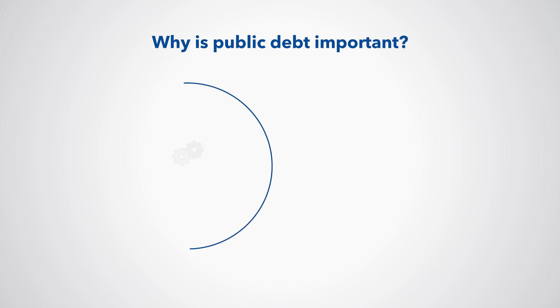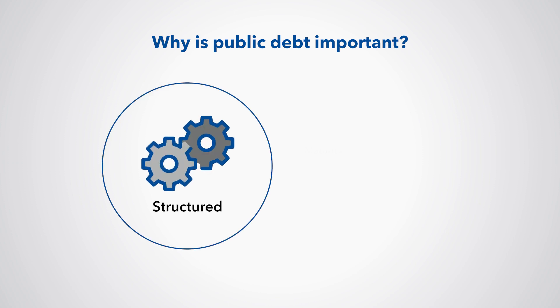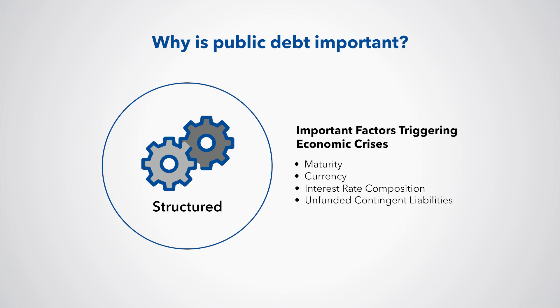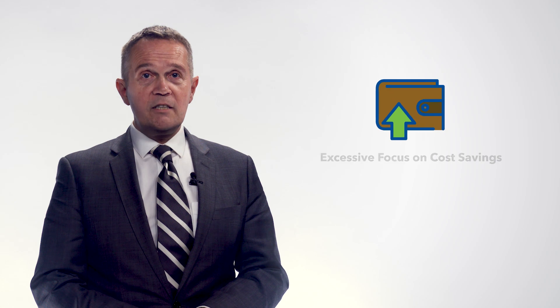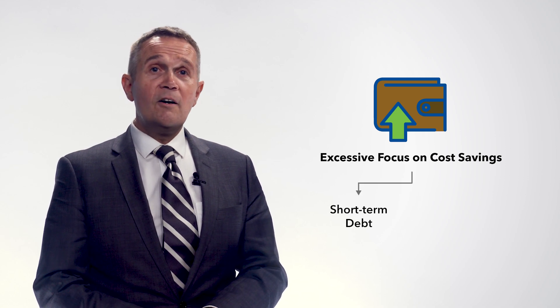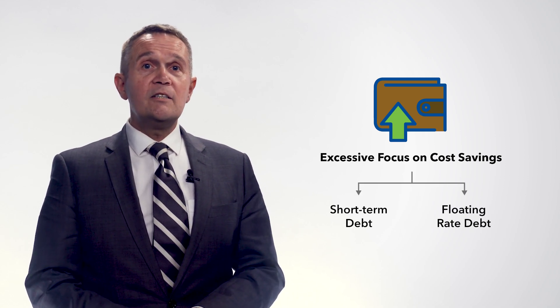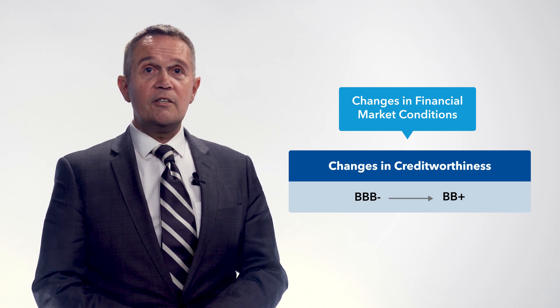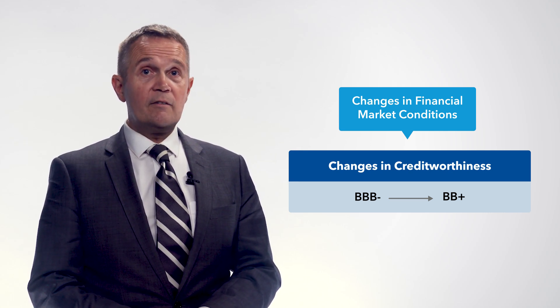But it's not just an issue of size. Debt portfolios poorly structured in terms of maturity, currency, and interest rate composition, and large unfunded contingent liabilities have been important factors in triggering economic crises throughout history. For example, irrespective of the exchange rate regime or whether domestic or foreign currency debt is involved, debt crises have often arisen because of an excessive focus by governments on possible cost savings associated with large volumes of short-term or floating rate debt. This has left government budgets seriously exposed to changing financial market conditions, including changes in the country's creditworthiness when this debt must be refinanced.